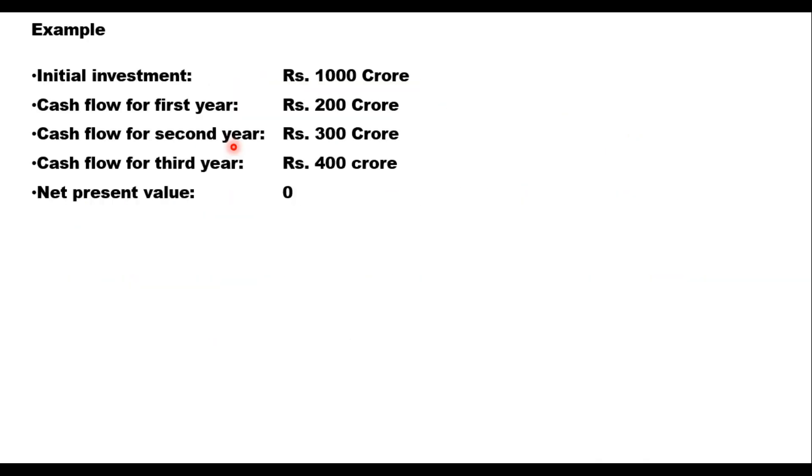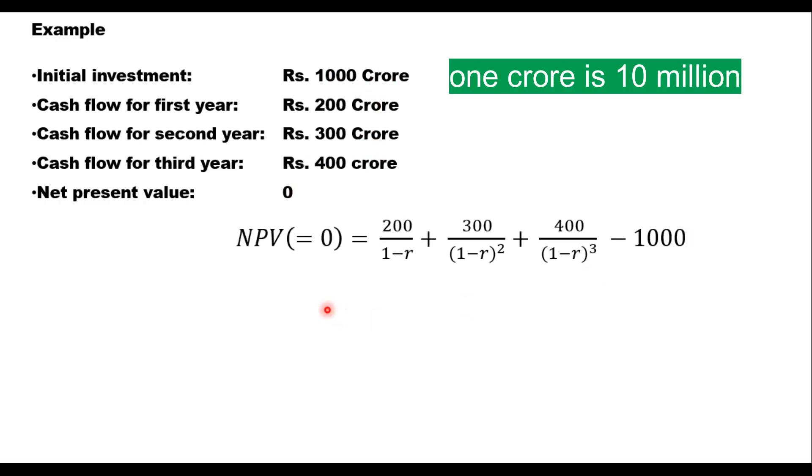So we take one example. Let us say there is an initial investment on a project of 1000 crore. Cash flow for the first year is 200 crore. Cash flow for the second year, 300. For third year, 400. And net present value is to be kept 0. So this is the income and this is the investment. So equation for this can be written like this that NPV which is equal to 0 is 200 upon 1 minus R that is your first year, second year, third year minus the initial investment of 1000 crore and you find out what is the value of R here.